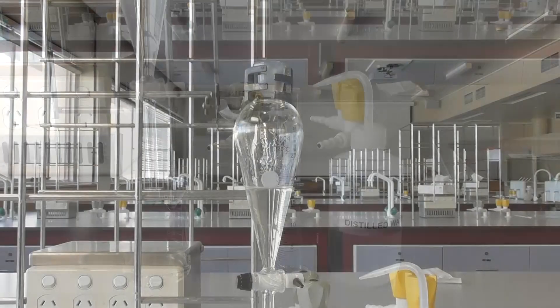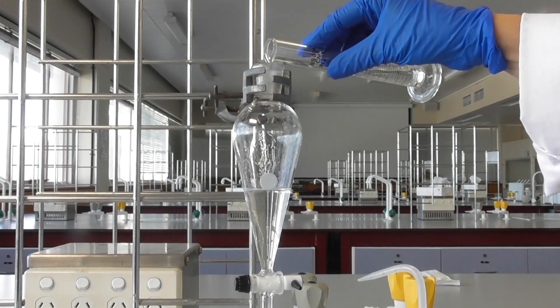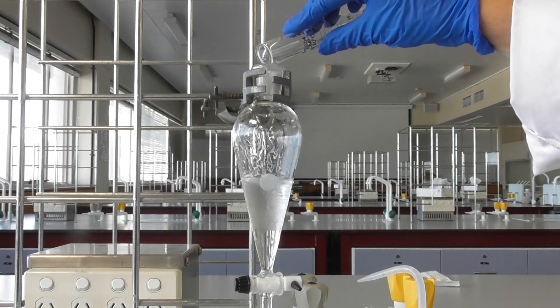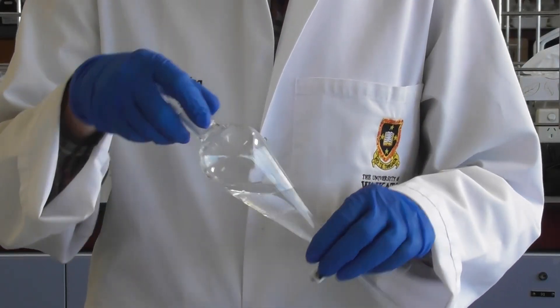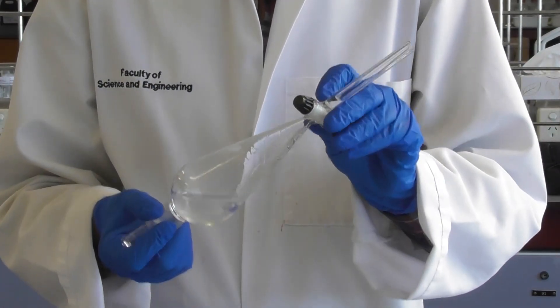A second washing step uses distilled water to remove any salts from the organic layer. Measure and add distilled water, stopper the funnel and shake again.